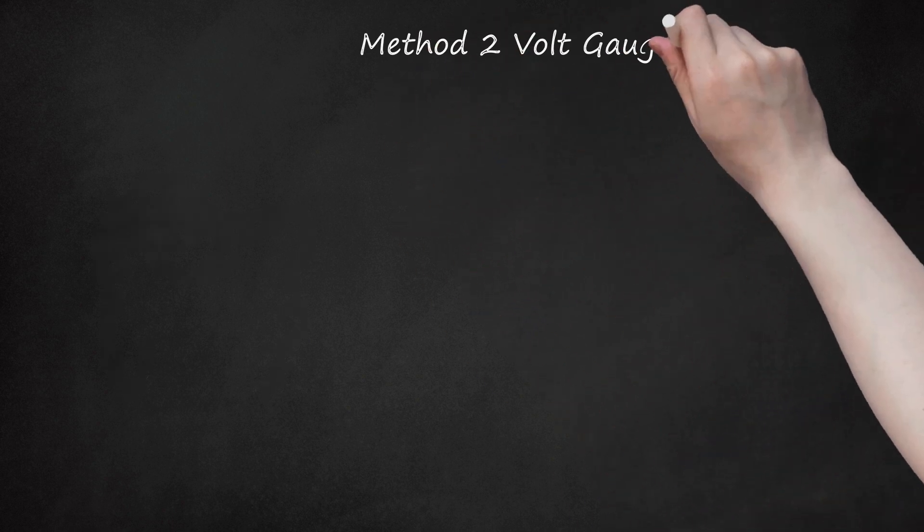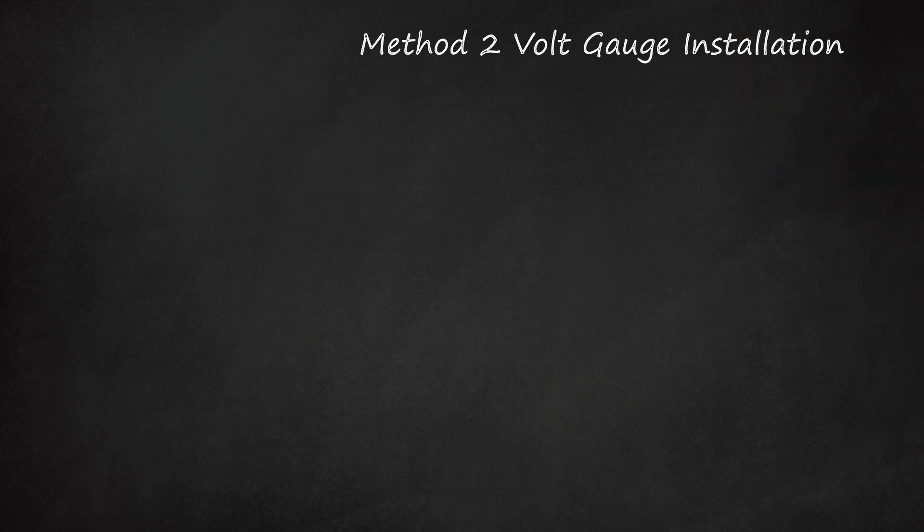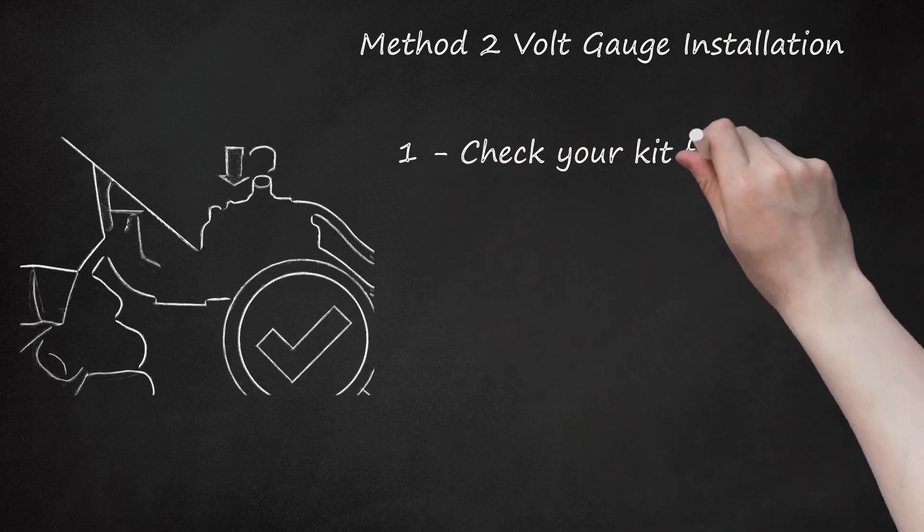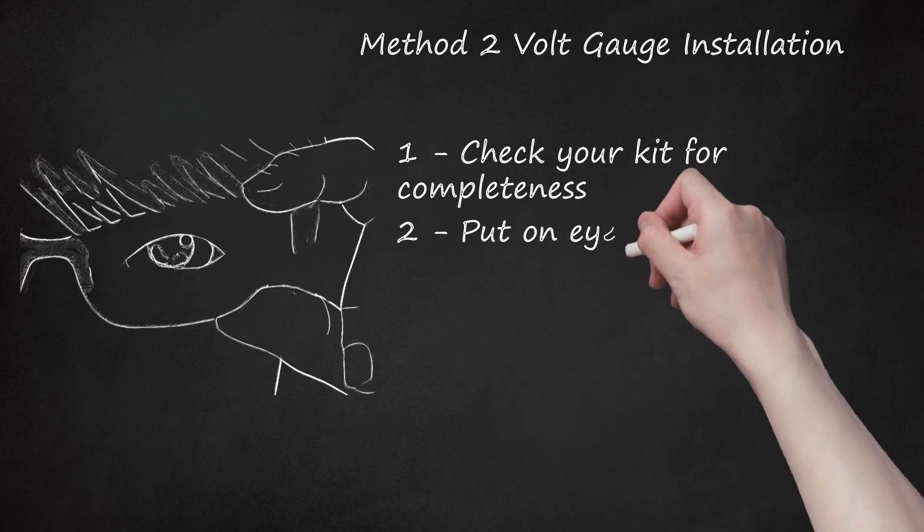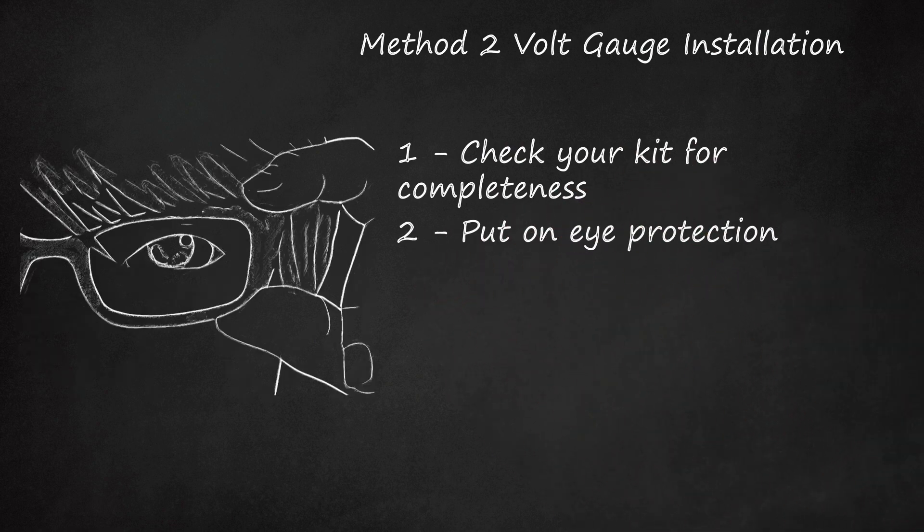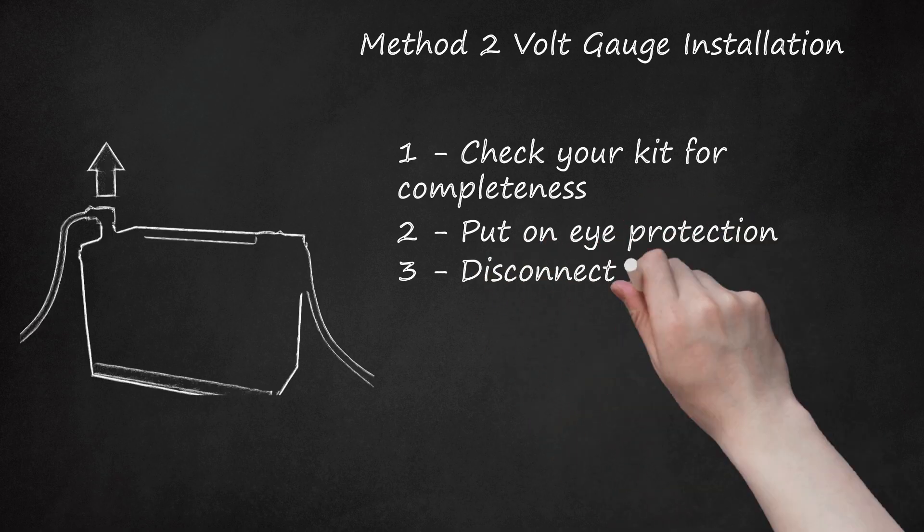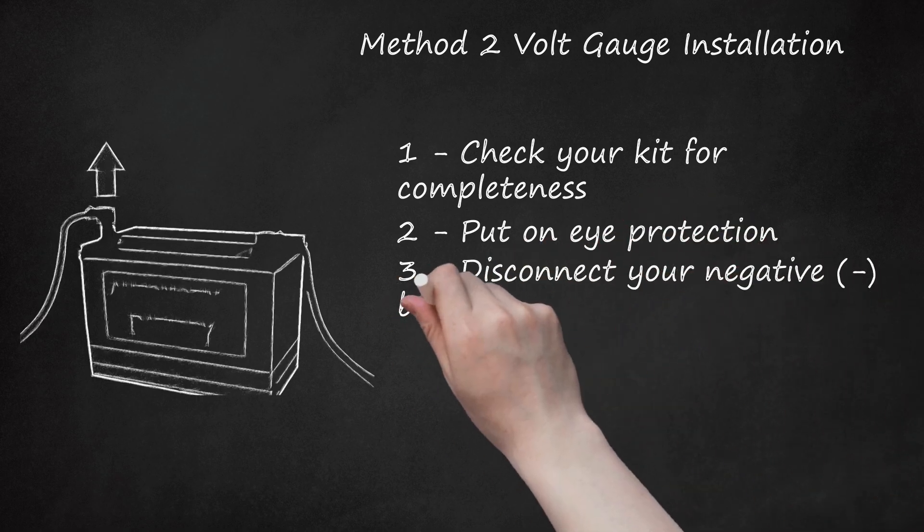Method 2: Volt Gauge Installation. Step 1: Check your kit for completeness. Step 2: Put on eye protection. Step 3: Disconnect your negative battery cable.